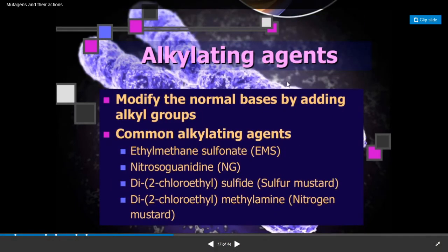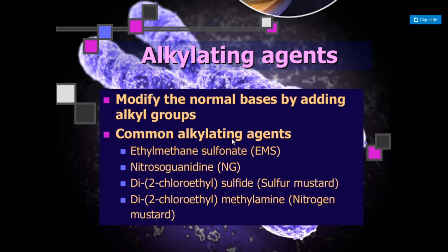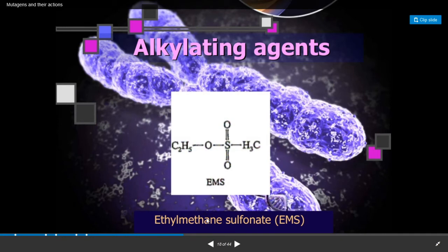Alkylating agents modify normal bases by adding alkyl groups. Common alkylating agents include ethylmethanesulfonate (EMS), nitrosoguanidine, di-2-chloroethyl sulfide (sulfur mustard), and di-2-chloroethylmethylamine (nitrogen mustard). This is the structure of ethylmethanesulfonate (EMS).